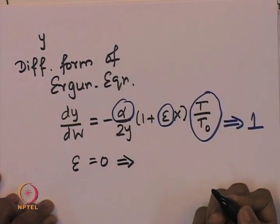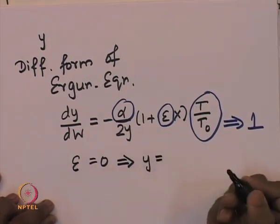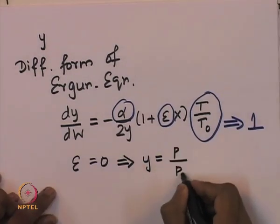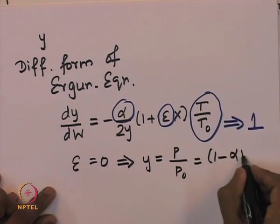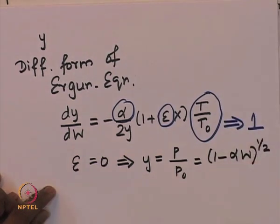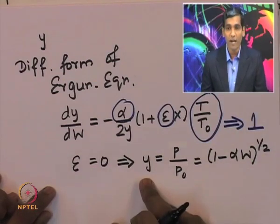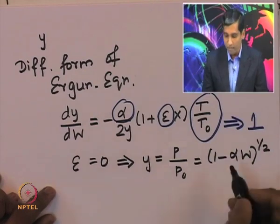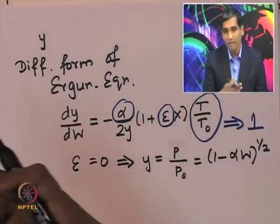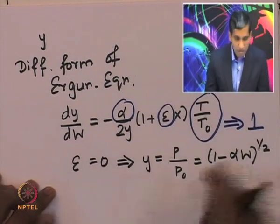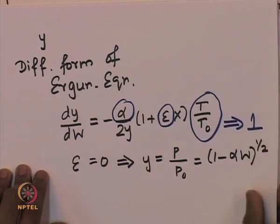From the simplified Ergun equation, we can solve and obtain the expression for y as a function of the other parameters: P/P0 = (1 − α·w)^(1/2), where α is the pressure drop parameter and w is the weight of the catalyst. So the mole fraction at any location in the reactor depends on how much catalyst is present and the corresponding pressure drop parameter. We can now plug this into the model equation to find the conversion as a function of catalyst weight.